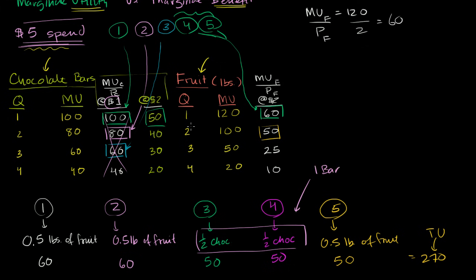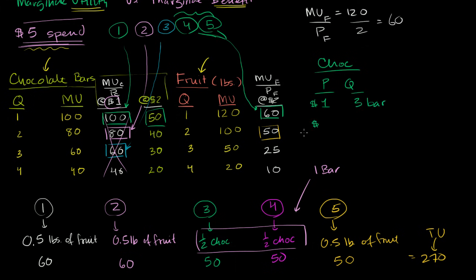All else equal — ceteris paribus — we haven't changed the price of fruit, we haven't changed consumer preferences, which would have changed the marginal utility numbers. All else equal, what happened just when we changed the price of chocolate bars? When the price was $1, the quantity demanded was three bars — that was from the first video. Now when the price has gone up to $2, the quantity demanded is exactly one bar.